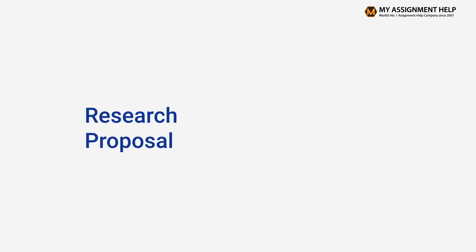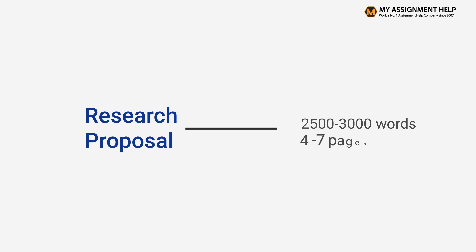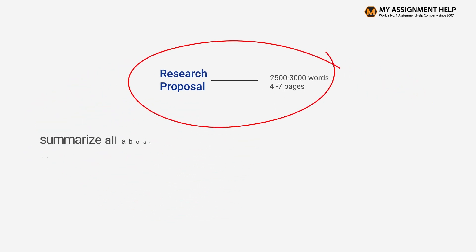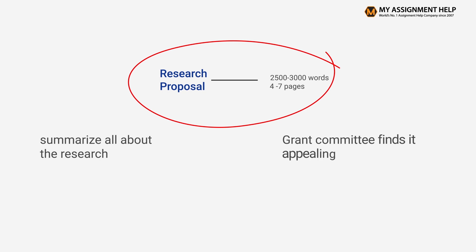A research proposal generally consists of 2500 to 3000 words, approximately four to seven pages. Within these four to seven pages, you have to summarize all about the research you are undertaking so that the grant committee finds it appealing, relevant, a quality research work, building upon pre-existing knowledge and providing a novel dimension to studies on the research topic.